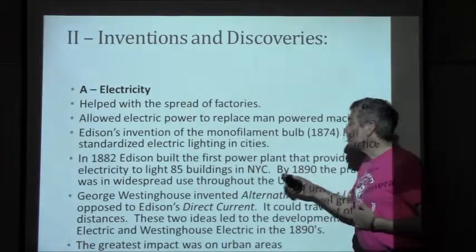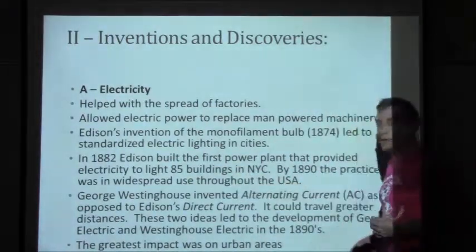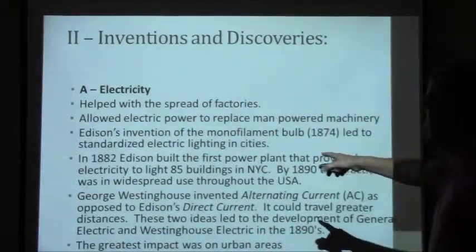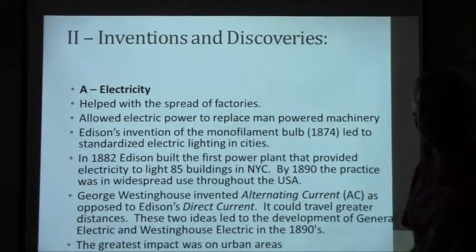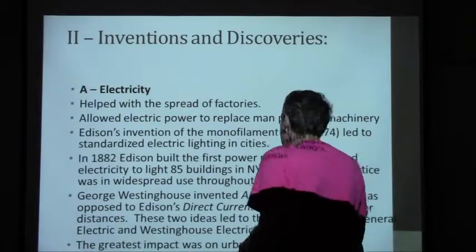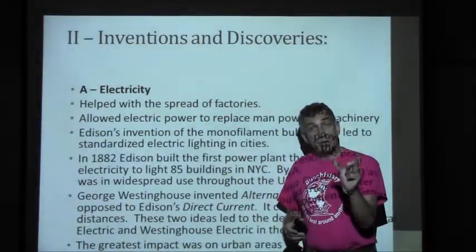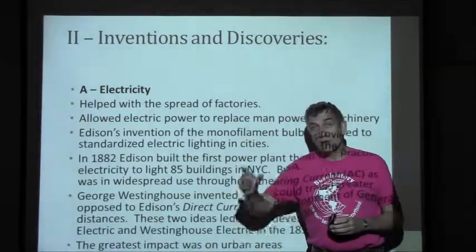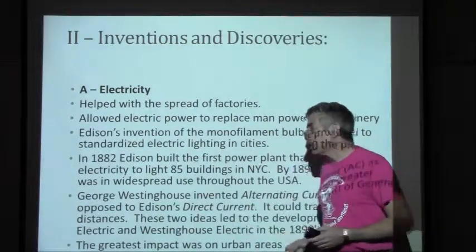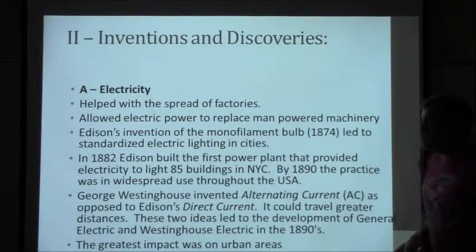In 1882, Edison built the first power plant that provided electricity to light 85 buildings in New York City, making it the first city actually lit in the United States. At the same time, George Westinghouse invented alternating current (AC) — as opposed to Edison's direct current (DC). AC is impulse current; DC is continuous current. These two ideas led to the development of General Electric. The greatest impact certainly was on urban areas.